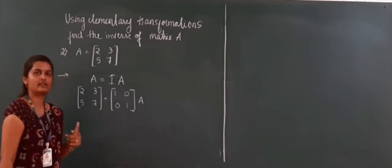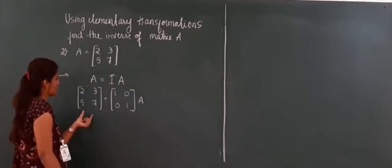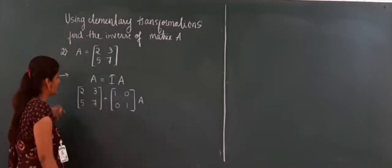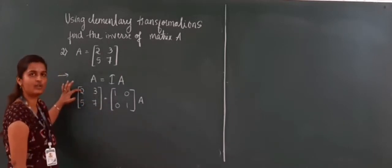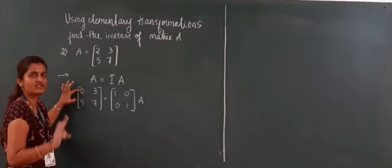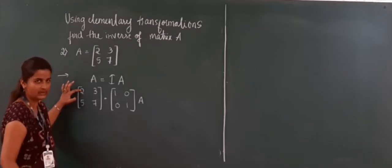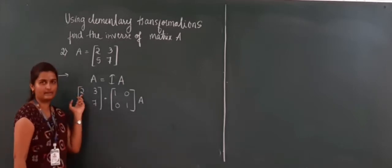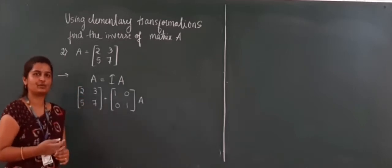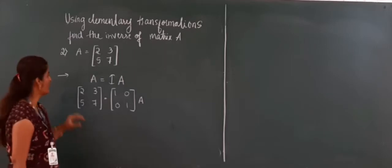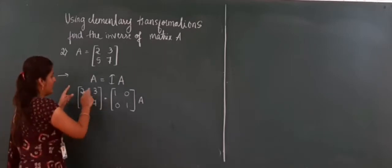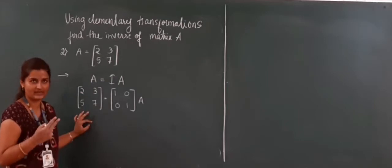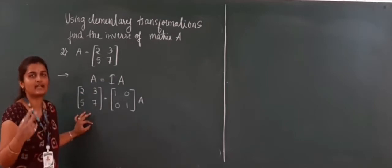So what is our next method? First I have to convert this matrix to the identity matrix. The identity matrix means the first element should always be 1. How can I convert this element to 1? For making elements as 1 in this matrix, always use the second operation — that is Ri changes to k·Ri.